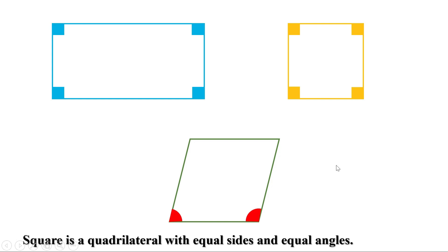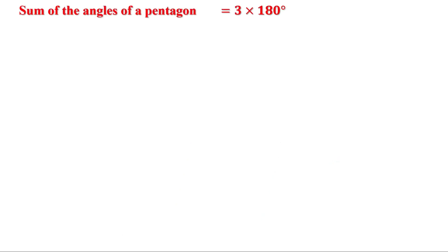Now let us consider a pentagon. What is the sum of the angles of a pentagon? We know the sum of the angles of a polygon is (n minus 2) into 180 degrees. Since there are 5 sides, the sum of the angles of a pentagon is 5 minus 2, or 3 into 180, which equals 540 degrees. When all angles are equal, one angle is 540 divided by 5, or 108 degrees.